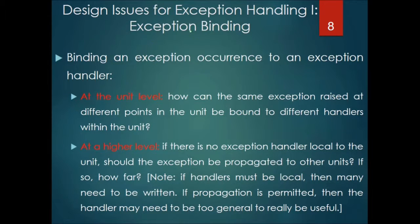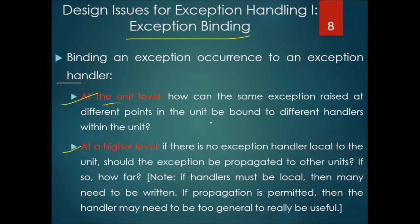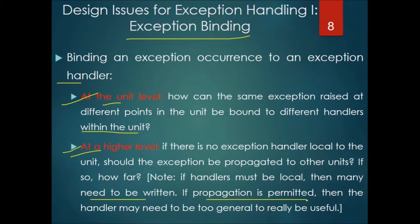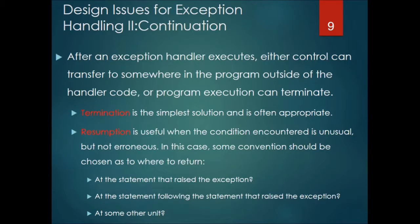There are various issues for exception handling. Exception binding — binding an exception occurrence to an exception handler — is one key issue. At the unit level, how can the same exception raised at different points in the unit be bound to different handlers within the unit? At a higher level, if there is no exception handler local to the unit, should the exception be propagated to some other unit, and if so, how far? If a handler must be local, many need to be written; if propagation is permitted, the handler may need to be too general to really be useful.